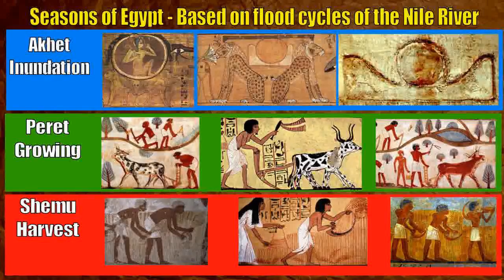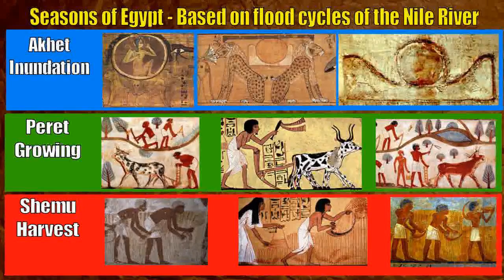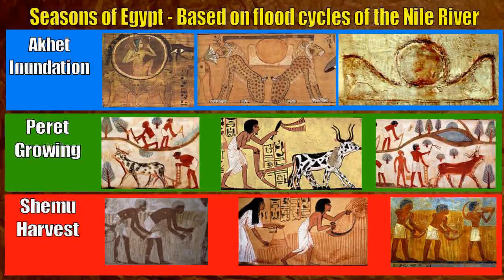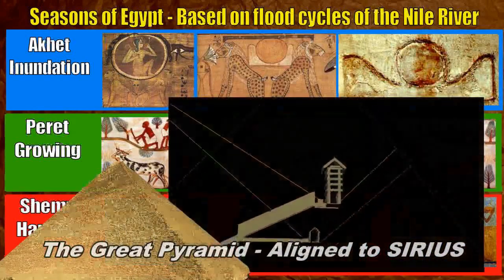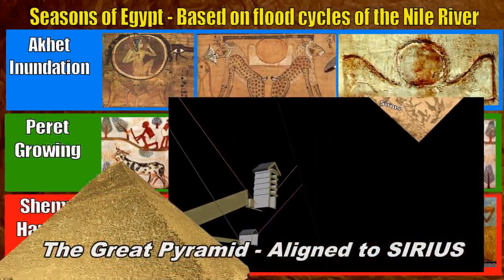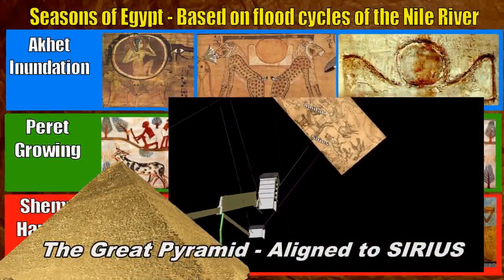There has been a persistent meme among certain circles that the Egyptians didn't have animals. This is entirely untrue and actually laughable, in the sense that certain researchers would repeat this demonstrably false claim even though with a very short search on Egyptian history it can be completely debunked, yet it persists. Following the flood — where silt and nutrients were brought to the land — there would be Peret, the growing season, and following that we had the third Egyptian season: Shemu, or the harvest season.